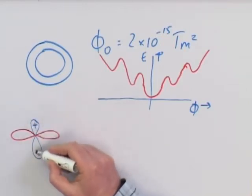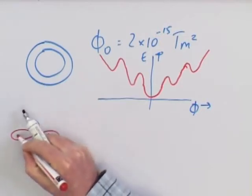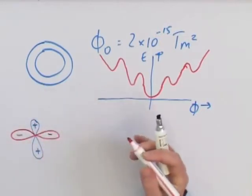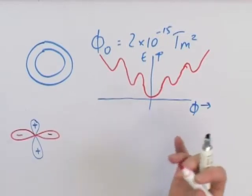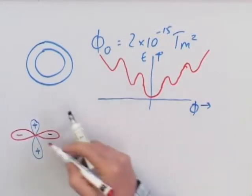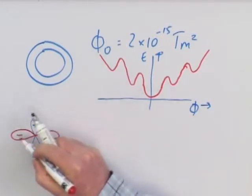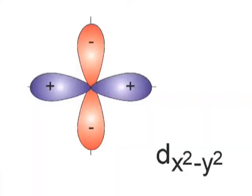Let's call this plus, then the other one is minus. This means that you have a phase change in the superconducting wave function — the order parameter — of one pi for orthogonal directions in the copper-oxygen plane.